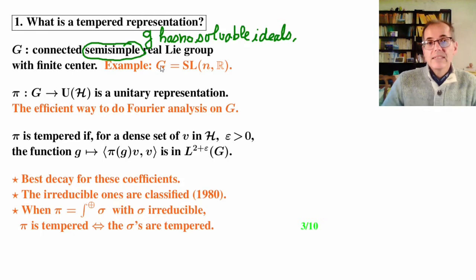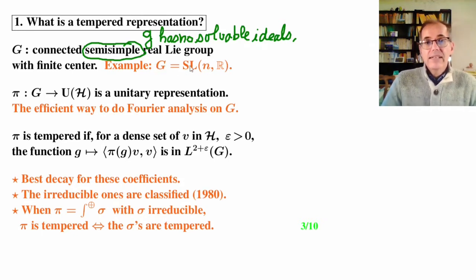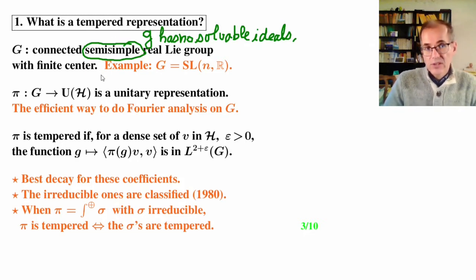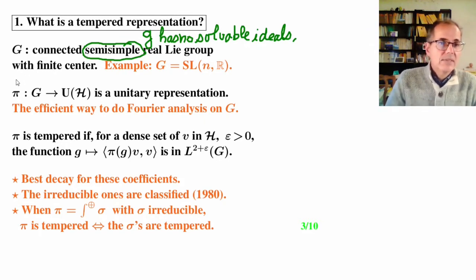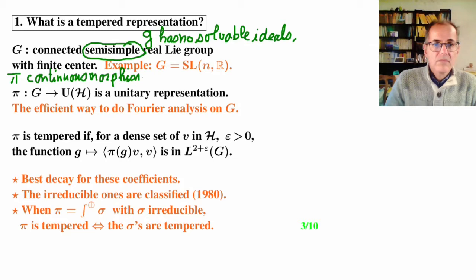The main example is the Lie group G = SL(n,ℝ) of n×n matrices with real coefficients and determinant one. We will have unitary representations of the Lie group G inside the unitary group of some Hilbert space. A unitary representation means that π is a continuous morphism from G to the unitary group U(ℋ).